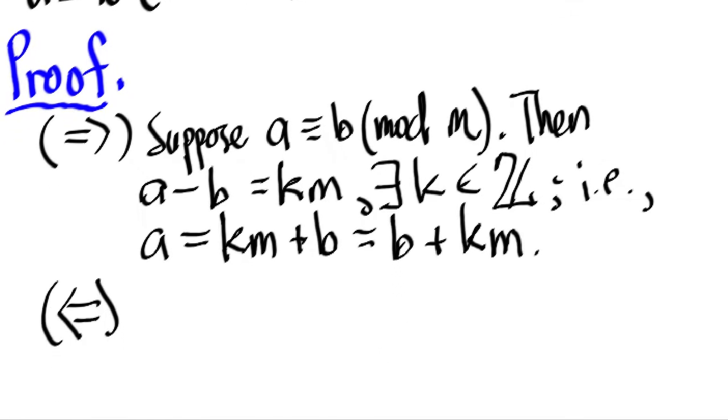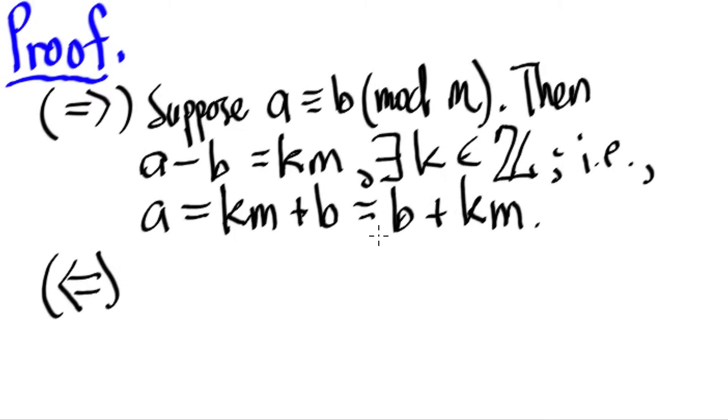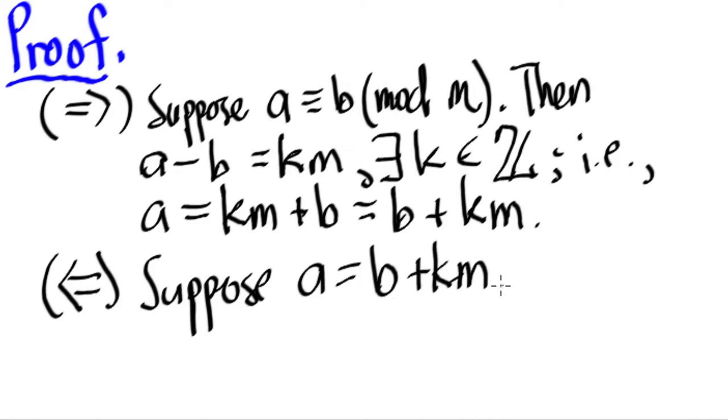Conversely, suppose A is equal to B plus KM. Actually, what we're going to do is just reverse the steps for some K in the integers.